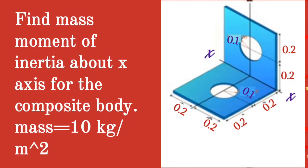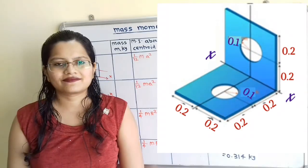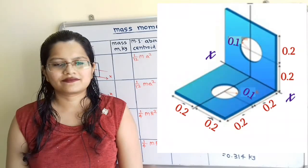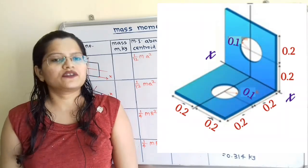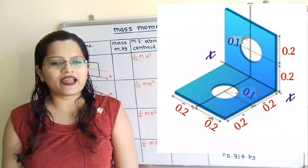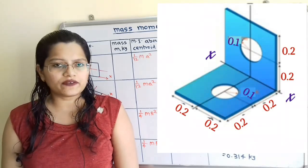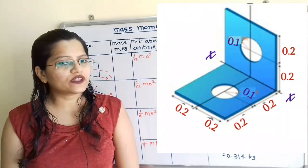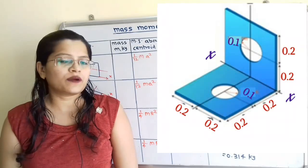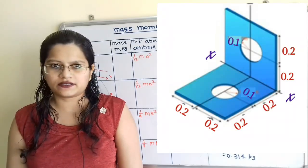Given question: find mass moment of inertia about the x-axis for the composite body. Mass is equal to 10 kg per meter square. In this question, we have to find out the mass moment of inertia for the given composite body about the axis XX.